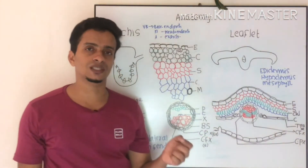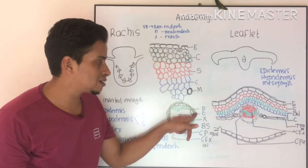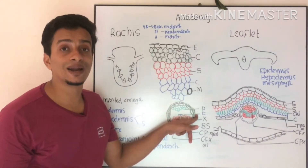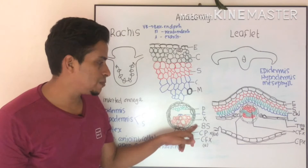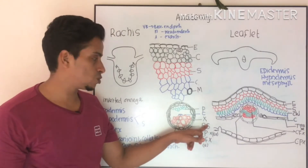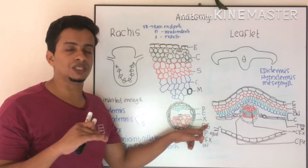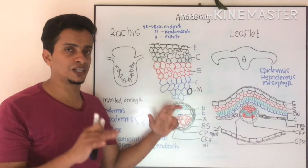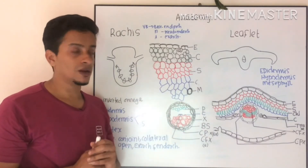Each bundle — you can see it is externally delimited by a bundle sheath, abbreviated as B.S. Inner to the bundle sheath, you can see the arrangement of vascular tissues, that is, xylem and phloem.